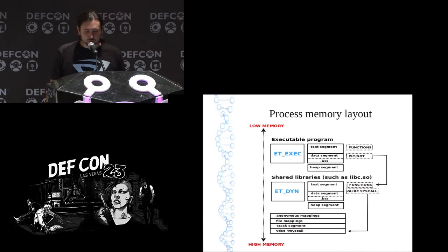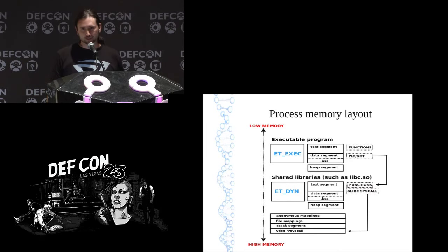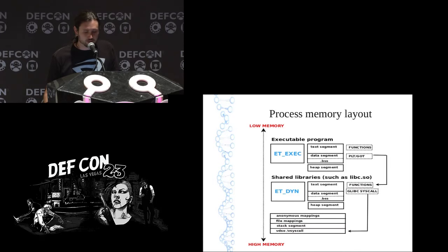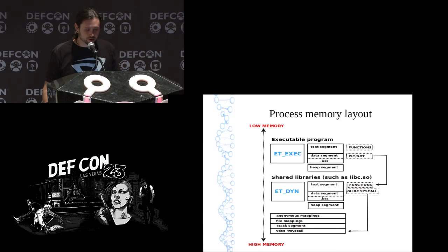A quick diagram to get people reacquainted with a process — this is a high-level overview. In memory, you've got the executable, which has a text segment, data segment, BSS at the end of the data segment, the heap, and functions in the text segment, also known as the code segment. In the data segment you have the PLT GOT, where the global offset table gets patched with function pointers pointing to libc. You also have glibc syscall wrappers pointing to the VDSO and Vsyscall page, anonymous memory mappings, file mappings, and the stack segment.